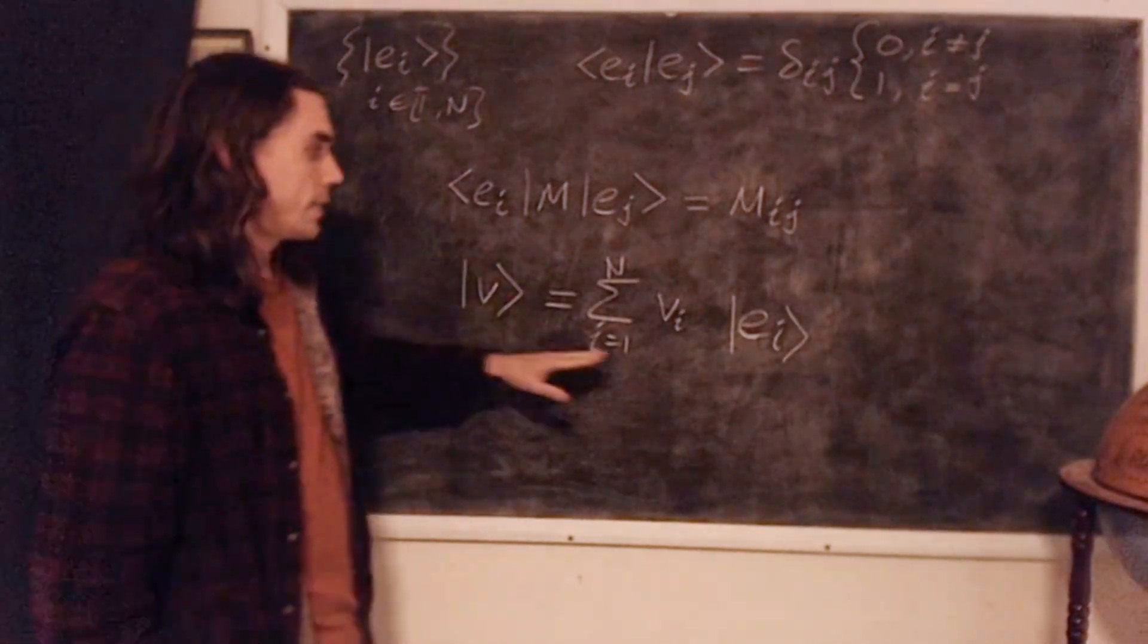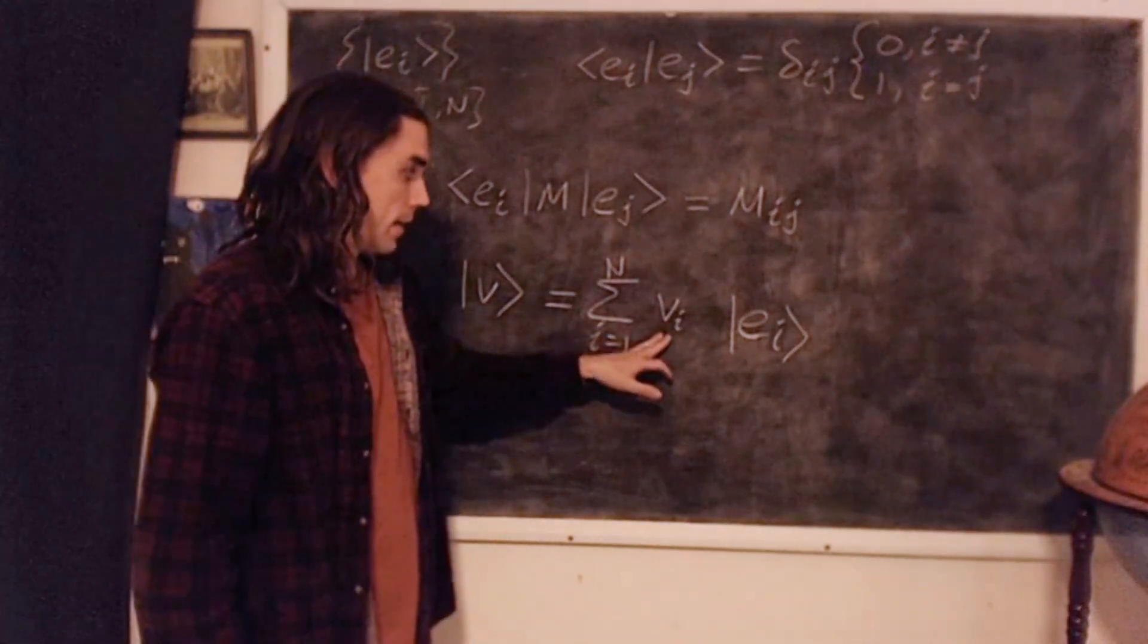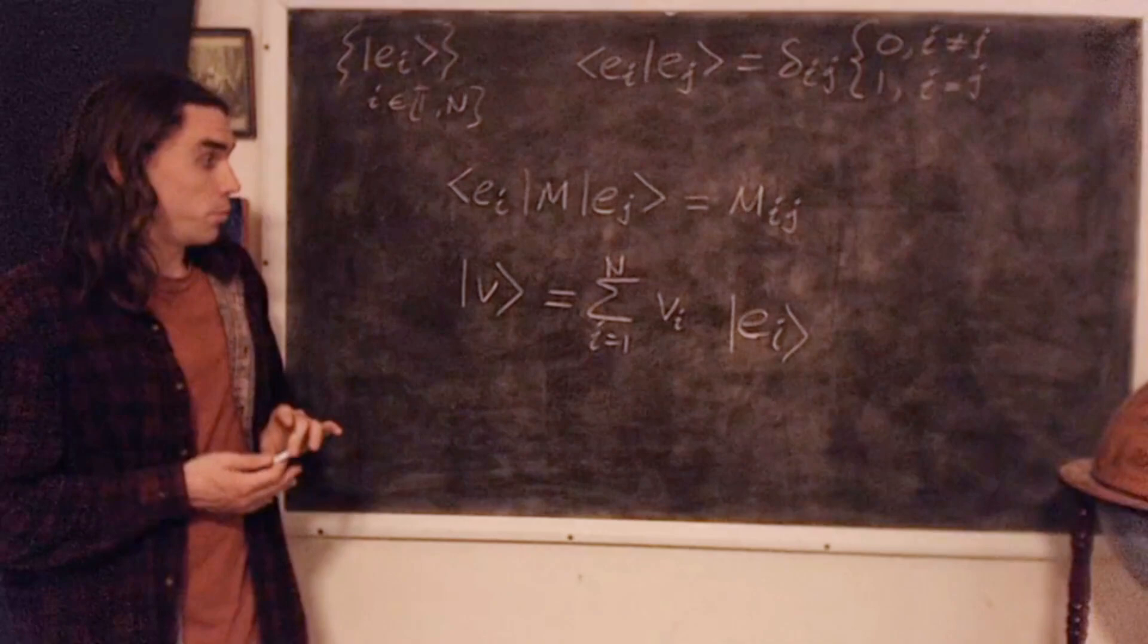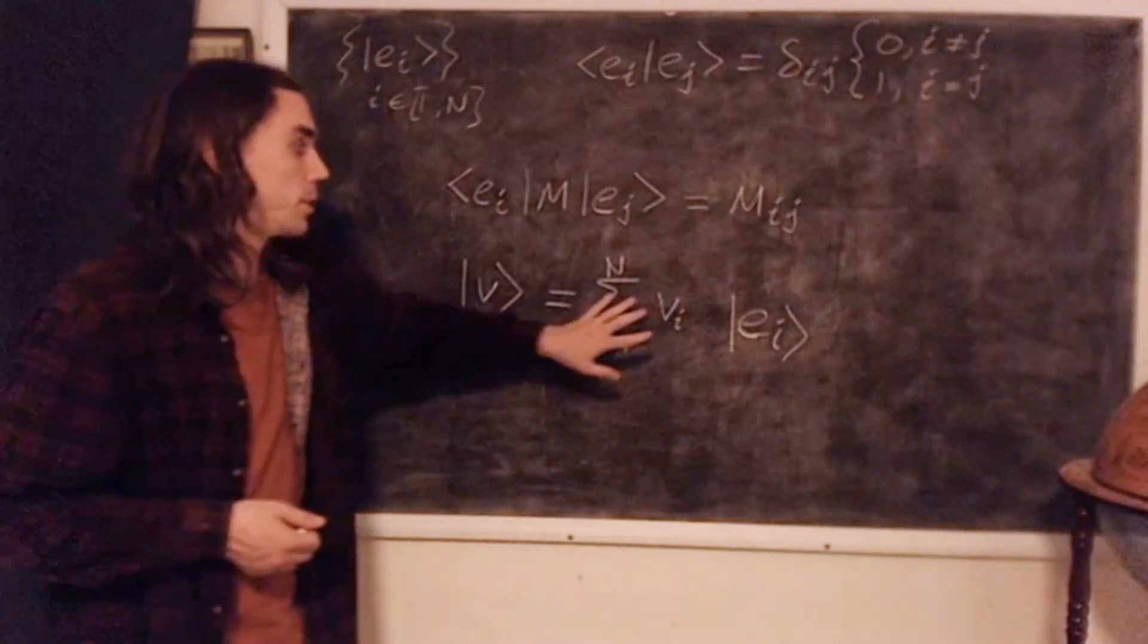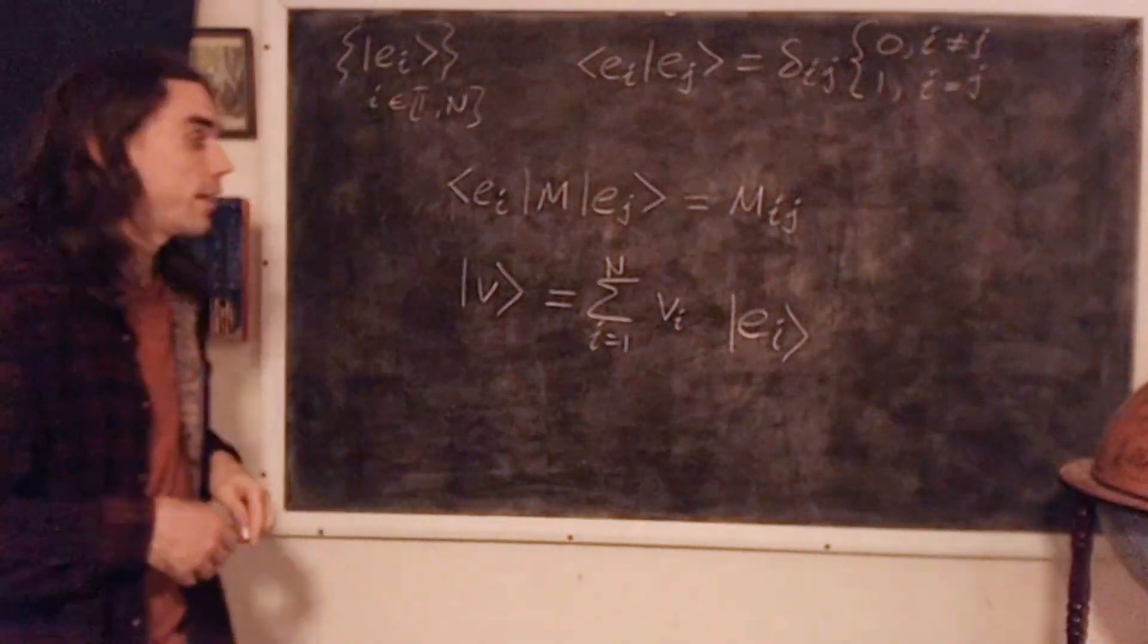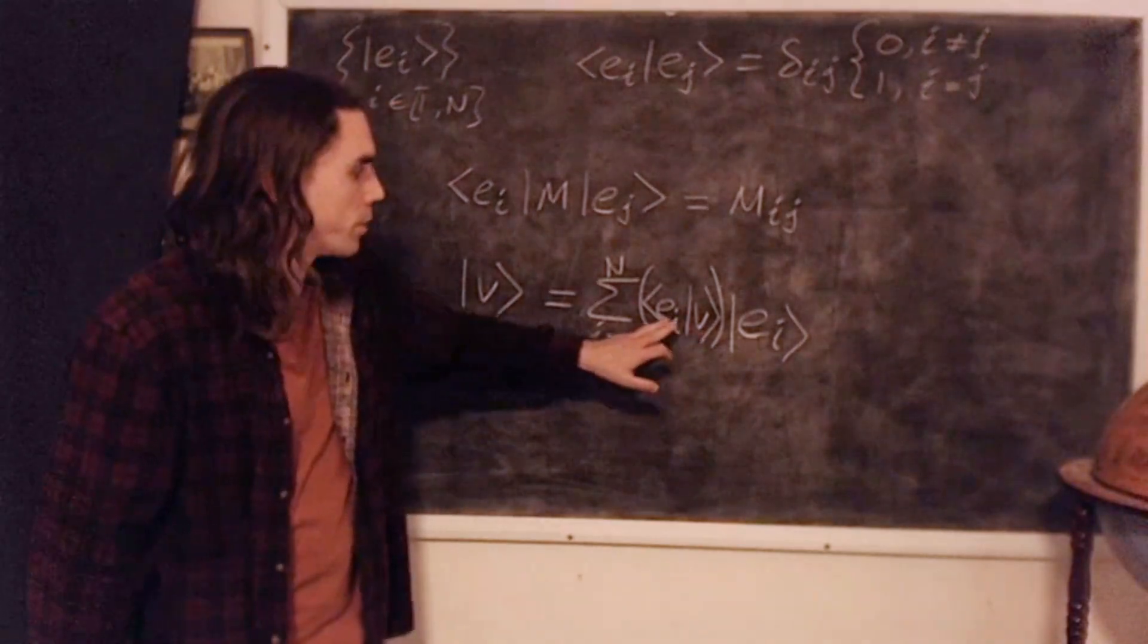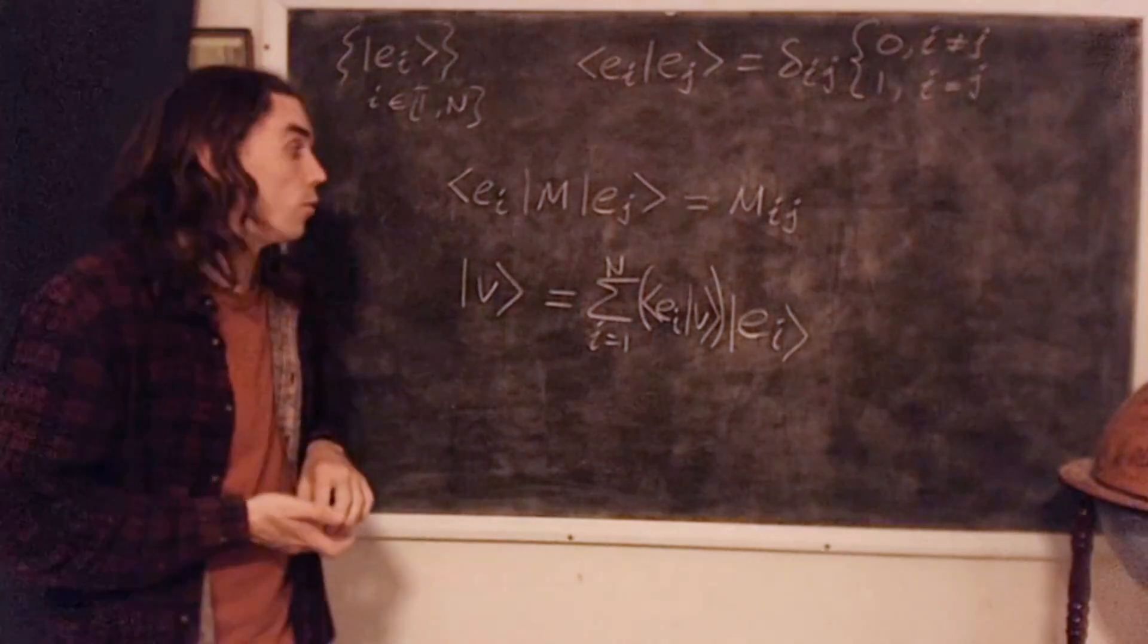we can take any vector we like and decompose it into any complete orthonormal basis, such as this. So for example, we can write this. That is, we can write any vector as a sum over the basis vectors EI, multiplied by coefficients, where VI is the projection of the vector V along the basis direction EI. So that's completely general, but then if you think about what we're saying this VI is, we want it to be the projection of vector V along direction EI. But in our Dirac notation, that's nothing other than the following.